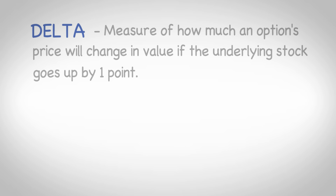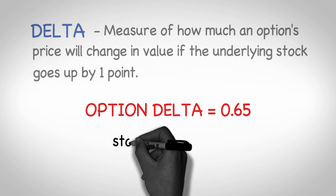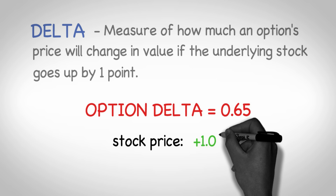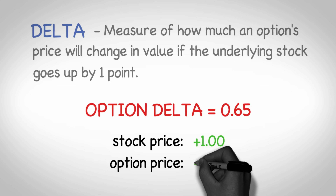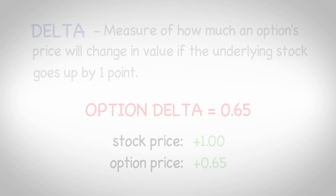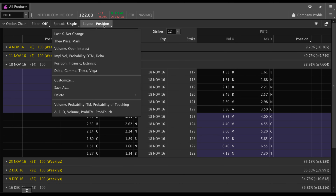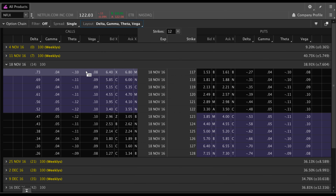Let's first talk about delta. Delta is a measure of how much an option's price will change in value if the underlying stock price goes up by one point. So if an option has a delta of 65 cents, then if the stock goes up by one point, the option contract will go up by 65 cents. Let me show you a real example — we can find delta, as well as all of the other option greeks, on the option chain by clicking Layout, then clicking delta, gamma, theta, vega.